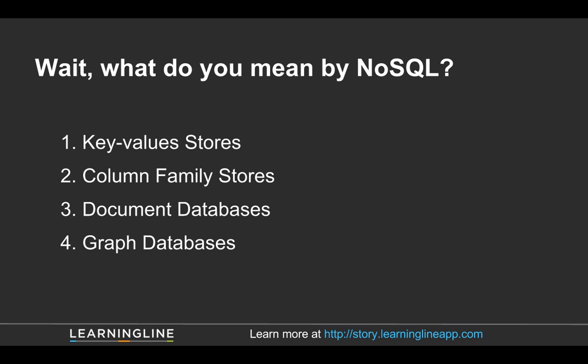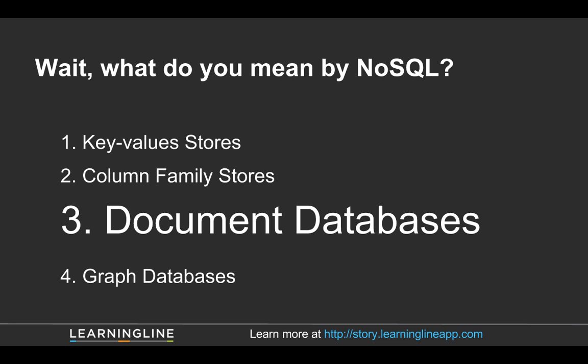We've got column family stores. We've got document databases, which let you store hierarchical information. Typically this is implemented with a JSON document, but it doesn't really matter — it's just hierarchical, flexible schemas. And then there are graph databases, which are great for relationships. But if you want to think about what kind of database people are choosing as a general application database, that's usually document databases.